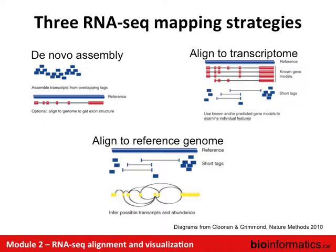Probably the most common approach is aligning to a reference genome while being splice-aware — taking your short reads and acknowledging they may not always align to one contiguous place, but may have gaps. Another strategy is aligning to a transcriptome, where your reference is a set of possible transcripts rather than the genome. That is probably the least common approach.